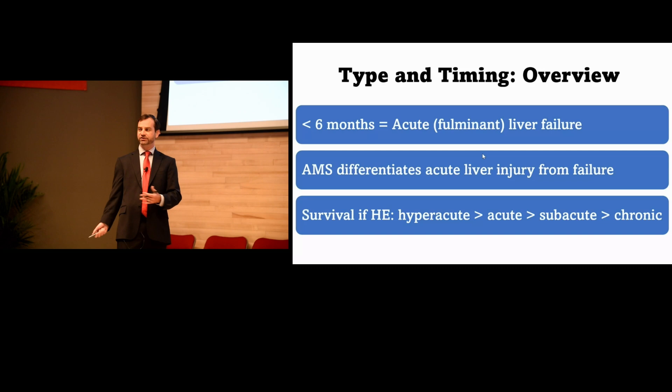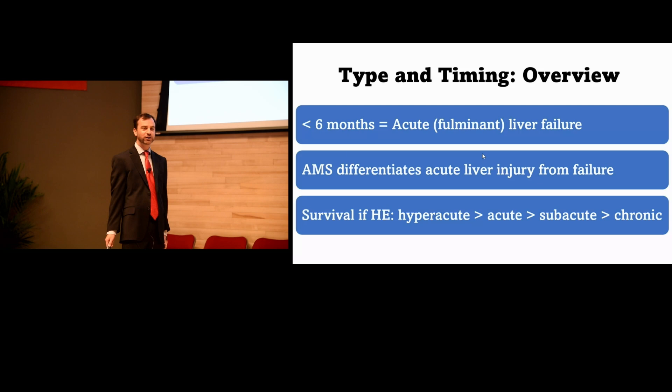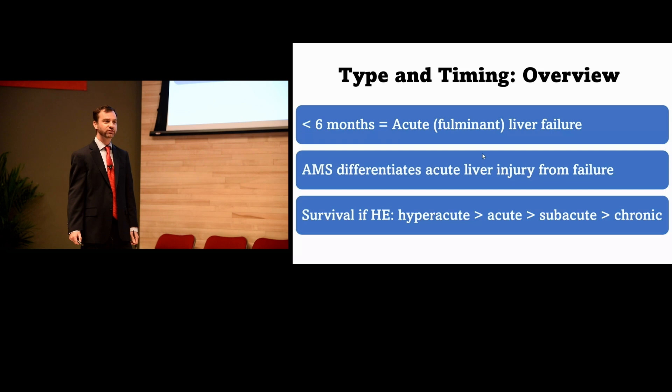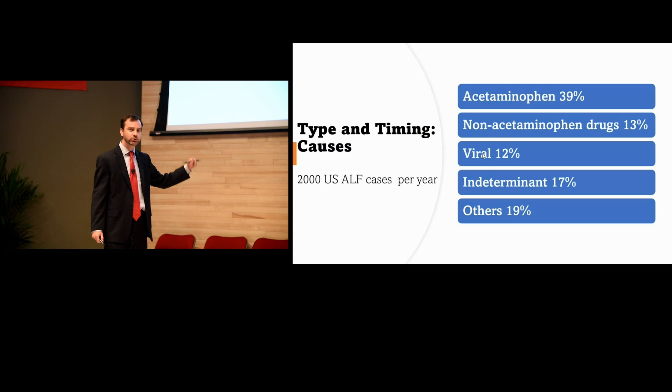It's not to say you shouldn't do everything you can for chronic cirrhotics — absolutely you should. But those patients are very, very challenging. You really want to jump on hyperacute and acute liver failure patients to give them the best possible chance, because they can have good outcomes.